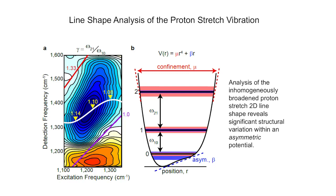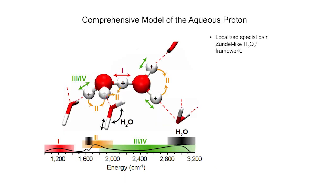Analysis of this line shape reveals that the hydration structure is indeed consistent with a zundel-type arrangement. However, the hydration environment is, on average, quite asymmetric. Analysis of the other spectral regions has allowed us to piece together what we believe is the most comprehensive picture to date on the structure of the aqueous proton.